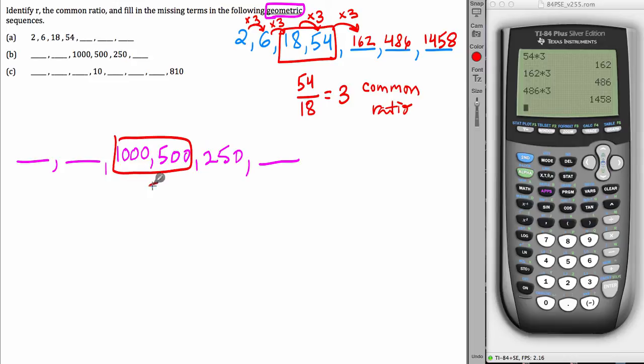take the later term, 500, divide by the earlier term, 1000, and get a result. That result is, in this case, 1 half. And what that means is, 1 half is the number that you multiply by each time to create the next term. It's called the common ratio.